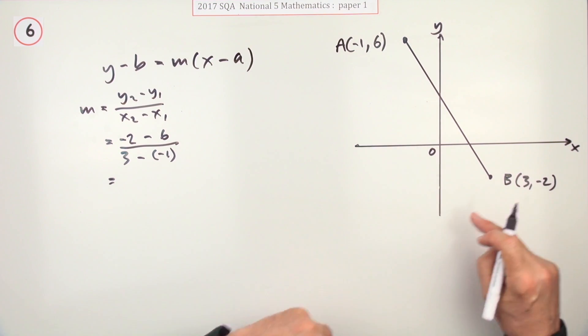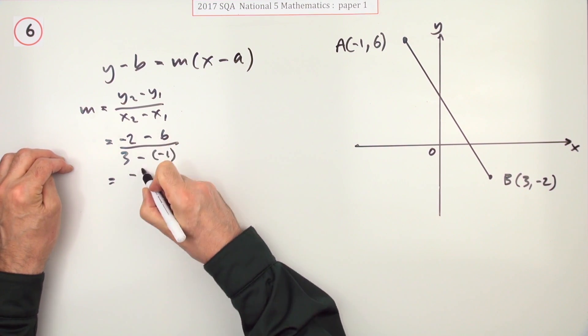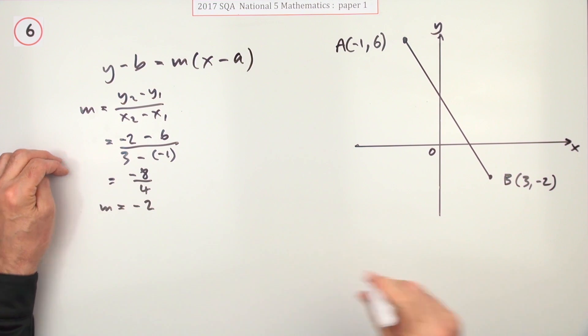You could do it the other way around, just make sure you stick to the same order, y₂ minus y₁, x₂ minus x₁. You'll get the same answer. So that's negative 8 over 4, that seems okay because that comes to negative 2.